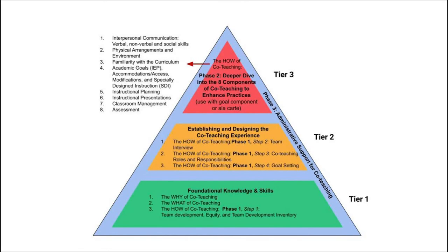This graphic represents the structure of the co-teaching training series. If you are watching this session, this means you have the foundational knowledge and skills needed to begin building that co-teaching sandwich by completing the sessions in Tier 1, and you have begun Tier 2 training in establishing and designing the co-teaching experience. You are on your way to creating a sensational co-teaching sandwich. Even though Tier 1 sessions provided foundational knowledge and skills, we recommend continuing with Tier 2 sessions in this series to build your co-teaching relationship, and put together all the ingredients to allow your team to be truly effective and benefit you as teachers, and most importantly, each of your learners.